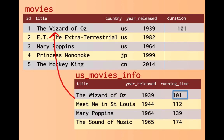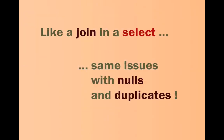The problem is that the CSV file is ignorant of my primary key, so I'm going to have to be extra careful in the update. After all, just like a join in a SELECT, we have the same issues with nulls and duplicates.